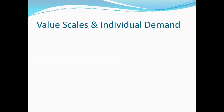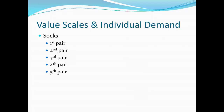Now we can take these ideas of value scales and combine them in order to get individual demand. First, we know that we have a value scale for pairs of socks. I've thought about that value scale for uses of socks, and from that we can derive a value scale for pairs of socks. The first pair is going to be preferable to the second pair, because the first pair fulfills a more important use. The second pair is preferable to the third pair, because it provides the second most important use — and on down we go. This also reflects diminishing marginal utility: each additional unit, say the second pair, is worth less than the first pair because it has a diminished marginal utility.